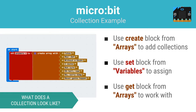Here's an example of a MicroBit array variable. This variable is an array named answers. This array is a collection of strings — each is a possible answer, just one item of the larger group.